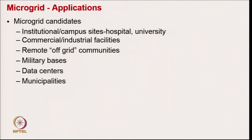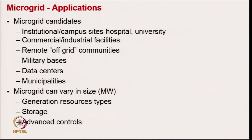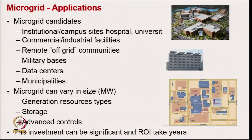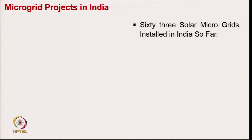Applications of microgrids include institutional campuses, hospitals, universities, commercial and industrial facilities, remote off-grid communities, military bases, data centers, and municipalities. Microgrids can vary in size from 3 kilowatts to megawatts with varying generation resource types, storage, and advanced controls, and the investment can be significant with returns taken over years. Typical examples of microgrids normally involve local generation with renewable energy sources.